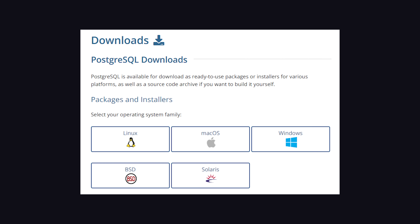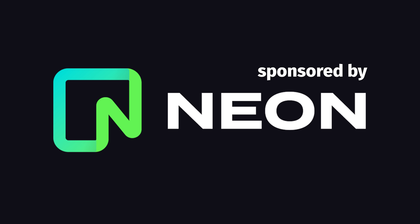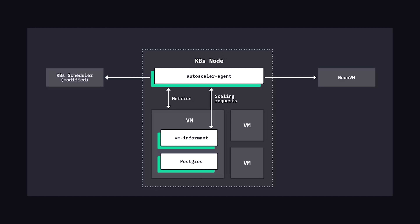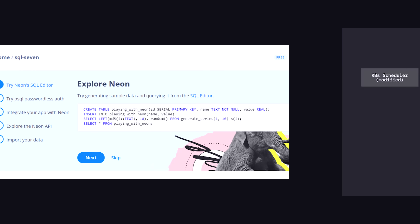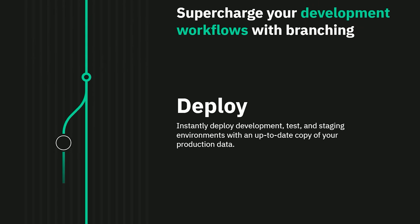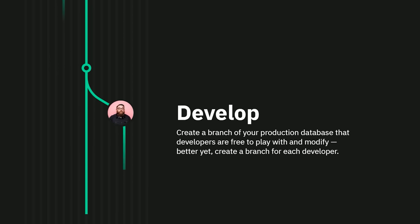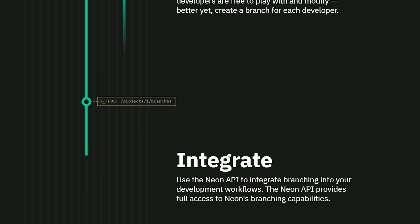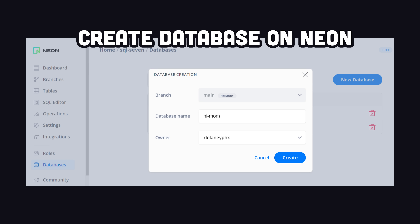To get started, you can download and install it locally, or better yet, use a free cloud database like Neon, which provides auto-scaling out of the box and a nice UI to manage your data, in addition to a bunch of other advanced features like branching.